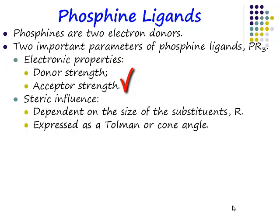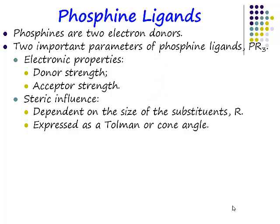What's the best electron-withdrawing group that you're familiar with? Fluorine. So you would put fluorine substituents — if you wanted to make your ligand as good an acceptor as possible you would substitute in as many fluorine atoms as possible. Those are just the electronic properties. By playing with the R group you can also completely change the size of a ligand, messing around with the steric environment of the metal centre.